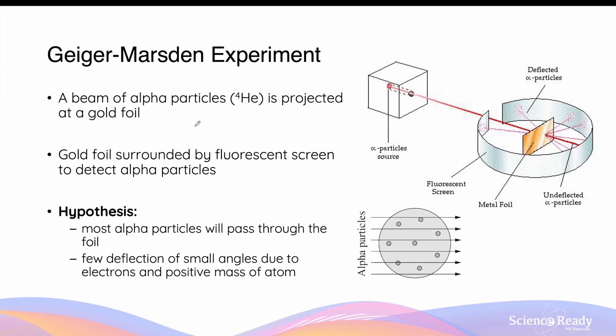Geiger and Marsden conducted an experiment involving alpha particles and gold foil to investigate the structure of the atom. In this experiment, they projected a beam of alpha particles, which is helium nucleus, at a thin gold foil. The gold foil in the diagram is surrounded by a fluorescent screen, which allows Geiger and Marsden to visualize the trajectory of the alpha particles.